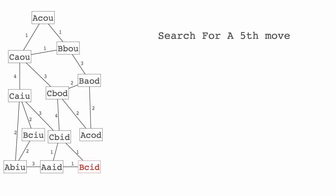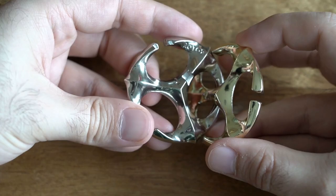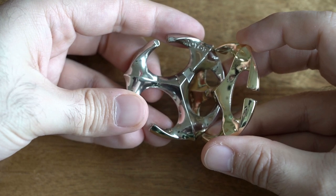The fifth move occurs right around position B C I D. Which is interesting — the starting position A C O U is quite far away from B C I D, so they did not make it easy. Here is the position B C I D.